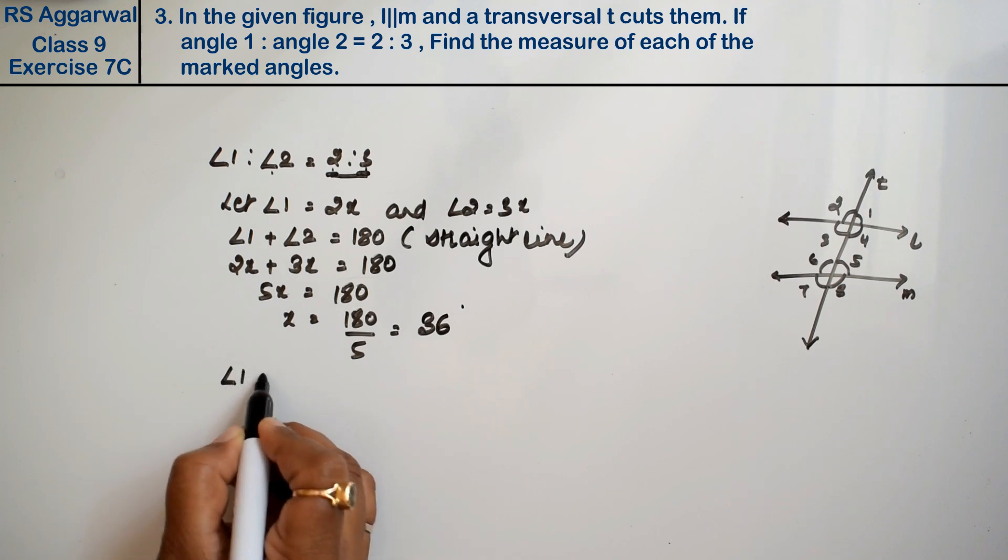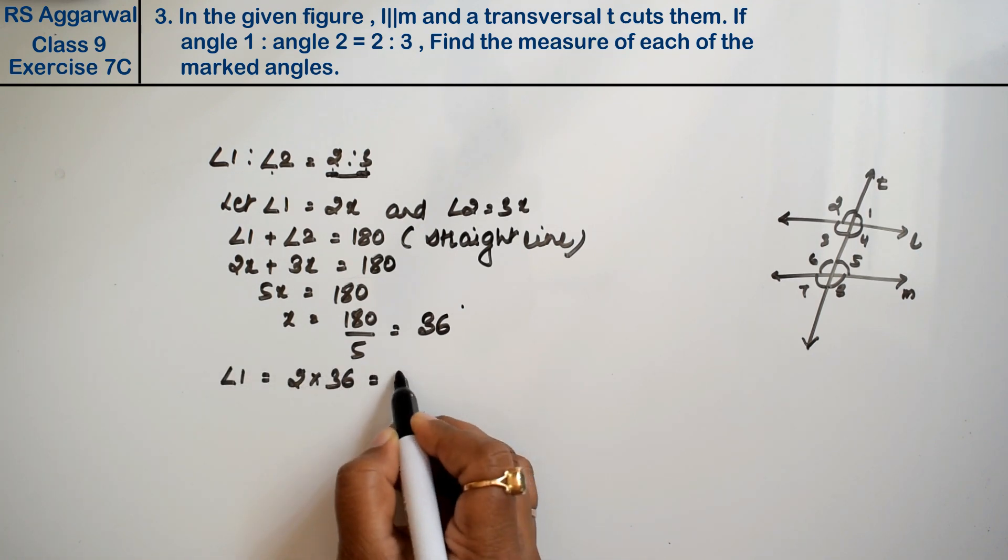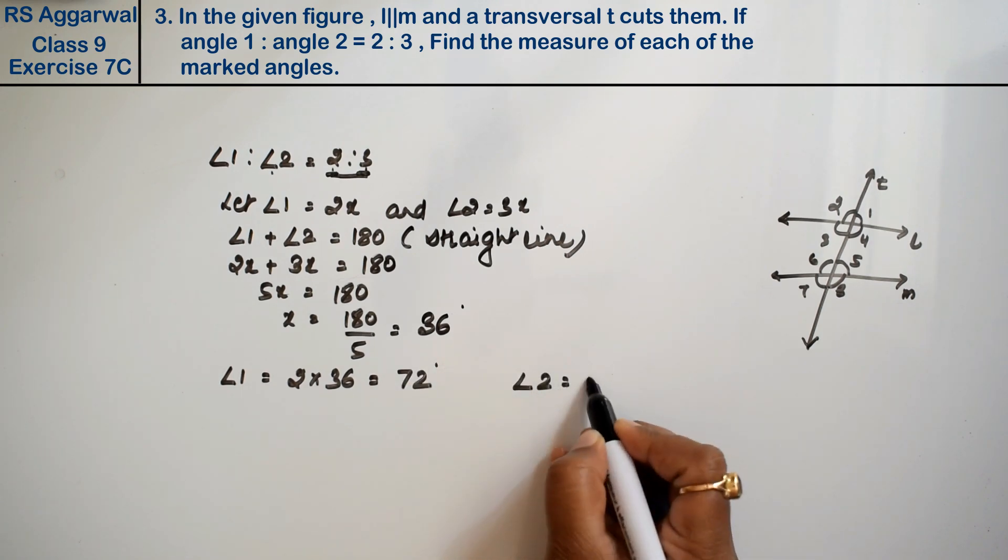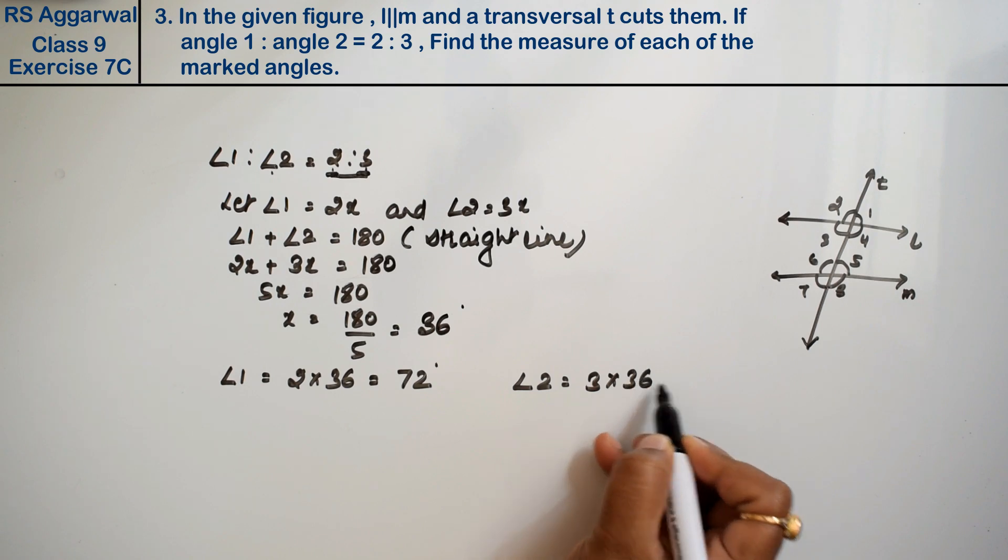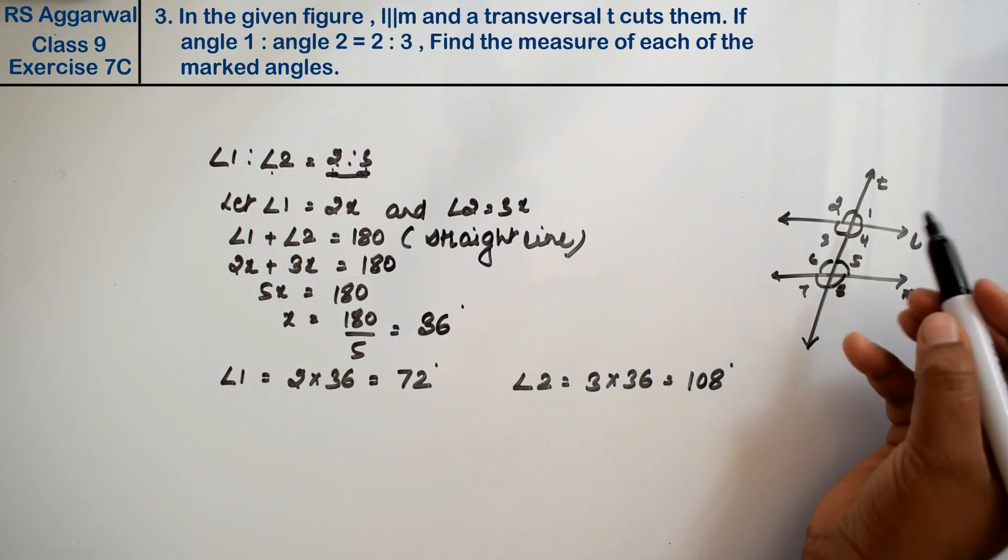So angle 1 will be 2 into 36, that is 72 degrees. And angle 2 will be 3 into 36, that is 108 degrees.